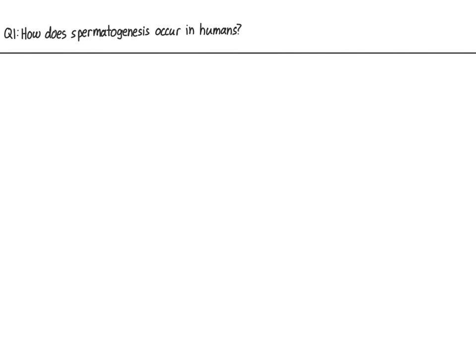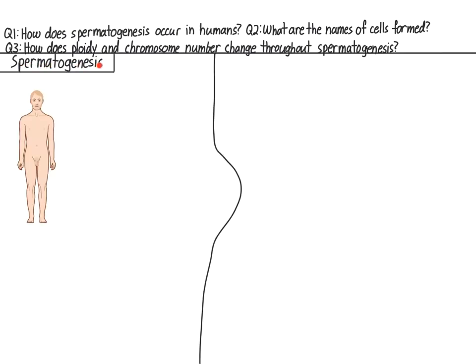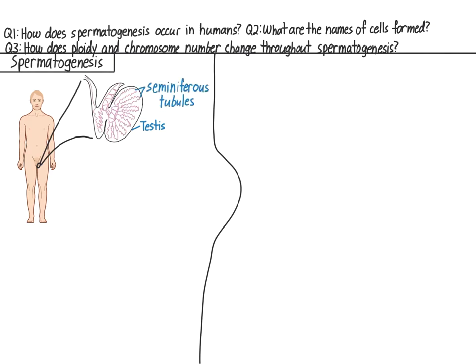Let's get to spermatogenesis. For this video, we have three questions: how does spermatogenesis occur in humans? What are the names of the cells formed? And how does ploidy and chromosome number change throughout spermatogenesis? Spermatogenesis occurs in the testes of males. Within the testes, there are a series of tubes called seminiferous tubules. This is where most of spermatogenesis takes place.